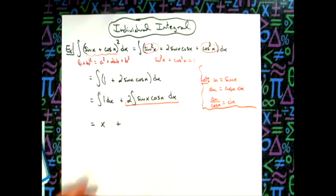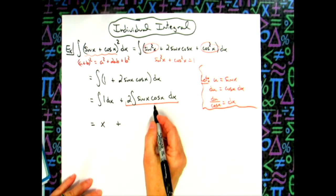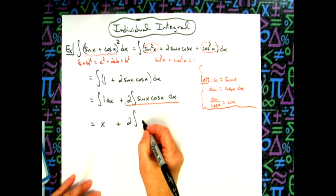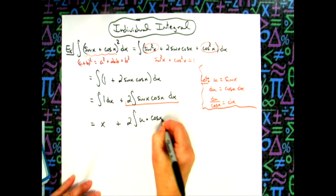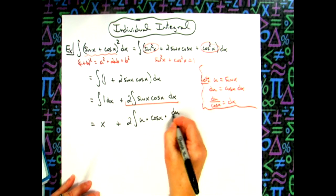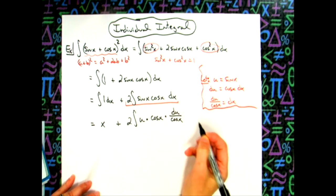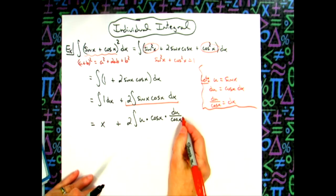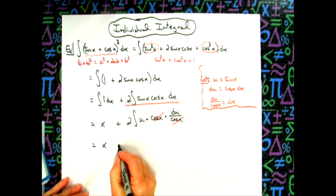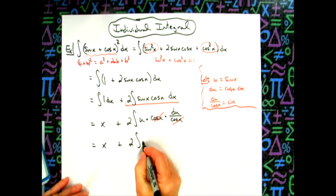So there's our u substitution. We're going to come back over here to this original integral then and start replacing things. So we'll have two times the integral. I'm going to replace the sine x with a u. We're going to leave the cosine x. We'll replace dx with what that equals, which is du over cosine x. That's going to then allow us to cross off those cosine x's. So we will have an integral just in terms of u. So we'll have our x here plus the integral u du.